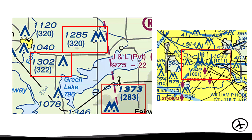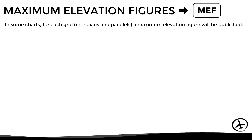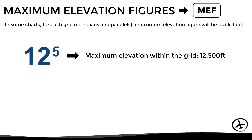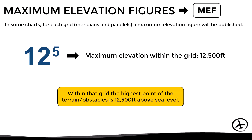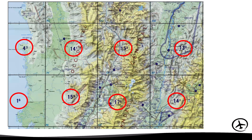In all cases, obstacles are accompanied by two numbers: the first represents the elevation above sea level, while the one in parentheses is the height of the obstacle above ground level. Also, in some charts for each grid of parallels and meridians a maximum elevation figure is published with three digits, representing the highest point within that grid. For example, if the figure shows 12,500 feet above sea level, that is the highest point of terrain and obstacles within that grid.